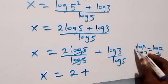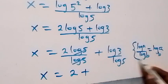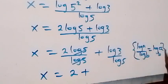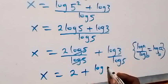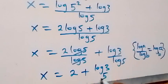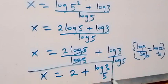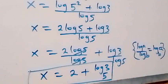So writing this now in this way, this gives us 2 plus log 3 to base 5. So here we have the solution to this problem as x equals to 2 plus log 3 base 5.